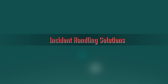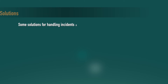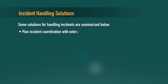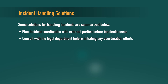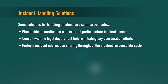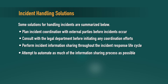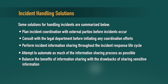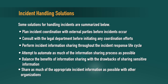There are some incident handling solutions available. First, plan incident coordination with external parties before the incident occurs. Second, consult with the legal department before initiating any coordination efforts. Third, perform incident information sharing throughout the incident response lifecycle. Fourth, attempt to automate as much of the information sharing process as possible. Fifth, balance the benefits of information sharing with the drawbacks of sharing sensitive information. Finally, share as much appropriate incident information as possible with other organizations so as to safeguard them or enable them to take proactive measures.